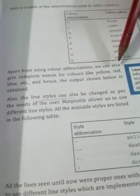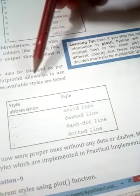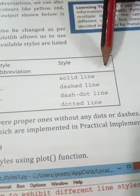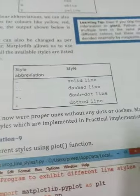Apart from using color abbreviations, you can also give the complete name of the color, like 'yellow', 'red', or 'blue'. The line style can also be changed as per the user's need. Matplotlib allows different line styles: solid line, dash line, dash-dot line, and dotted line. These are all available styles listed in the video.